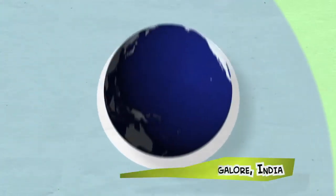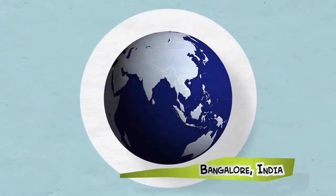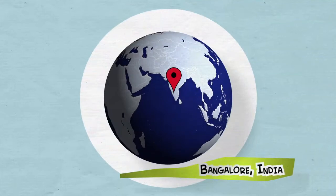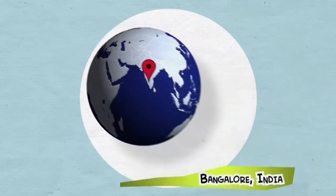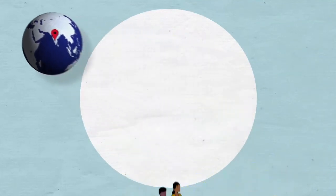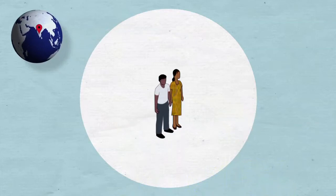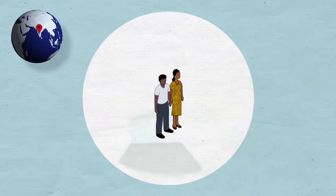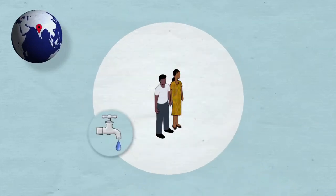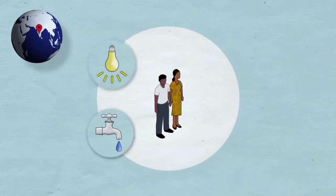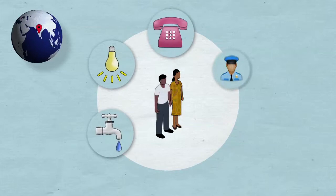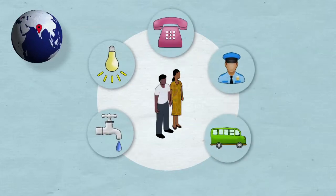In Bangalore, India, the Citizen Report Card was used to map the experiences of community members in dealing with public services such as water supply, electricity, telephone, police, transportation, and healthcare, among others.